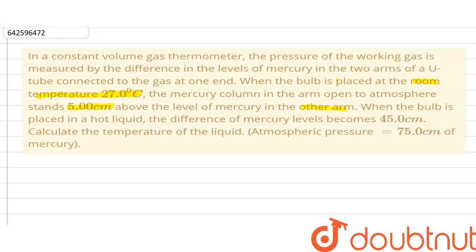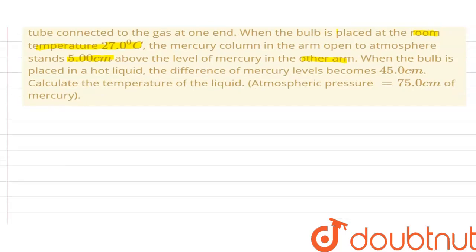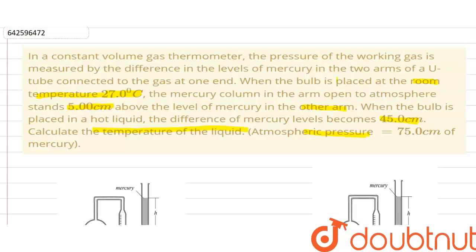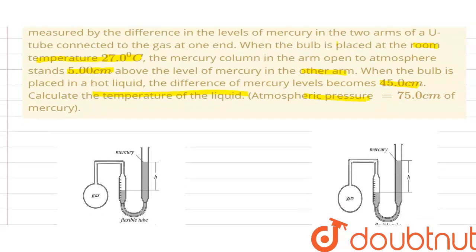When the bulb is placed in a hot liquid, the difference of mercury levels becomes 45 centimeters. We have to calculate the temperature of the liquid. The atmospheric pressure is given as 75 centimeters of mercury. Now let's consider our two cases here.